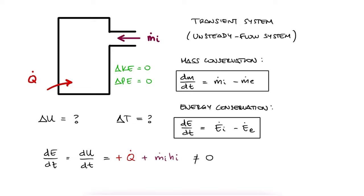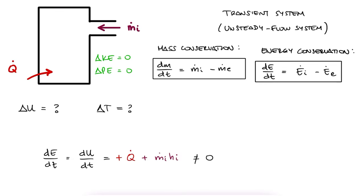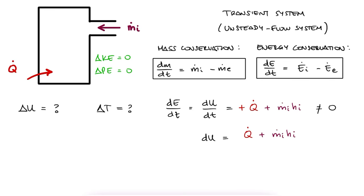If the question is how much is the temperature changing, which is directly tied to the change in internal energy, du would be equal to the right hand side times dt, and we can therefore integrate to find the change in internal energy, delta u.